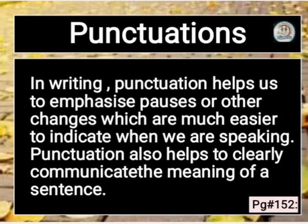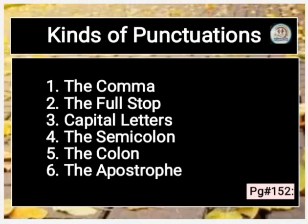Punctuation کا مطلب ہے وقفہ، ٹھہراؤ۔ Punctuation کسی sentence میں وقفے یا ٹھہراؤ کی مدد سے الفاظ کو ظاہر کرنے میں آسانی اور وضاحت کرتا ہے جو ہم بولتے ہیں۔ Punctuation sentence کے مطلب کو واضح طور پر سمجھانے کے لئے بھی استعمال کیا جاتا ہے۔ Kinds of punctuation: the comma, the full stop, capital letters, the semicolon, the colon, the apostrophe۔ عام طور پر Punctuation کی زیادہ اقسام ہیں لیکن ہمارے پاس 6 اقسام ہیں — ہم 6 کو discuss کریں گے۔